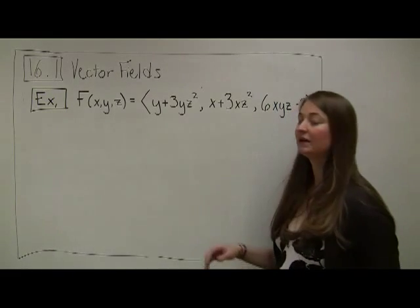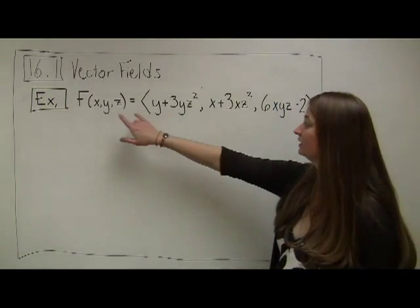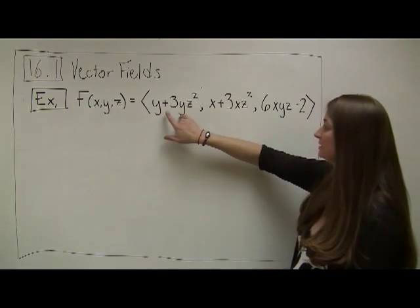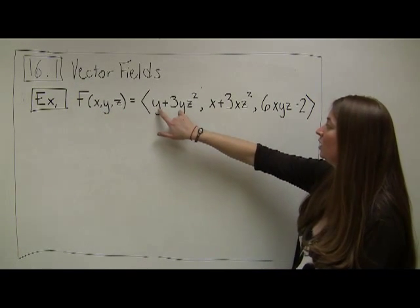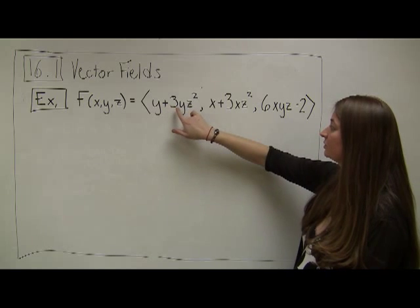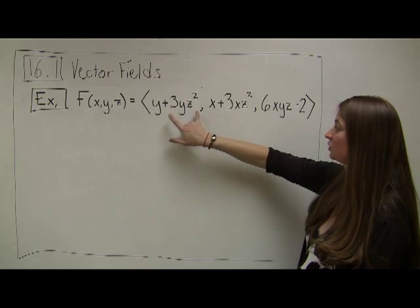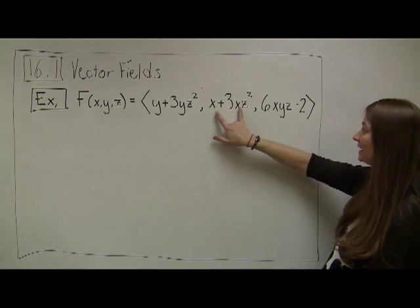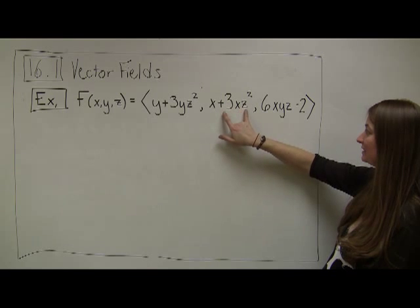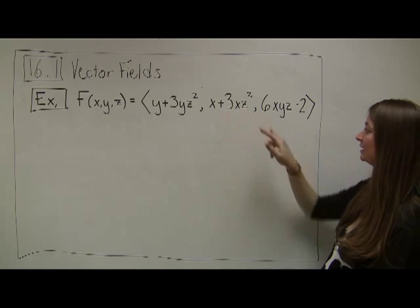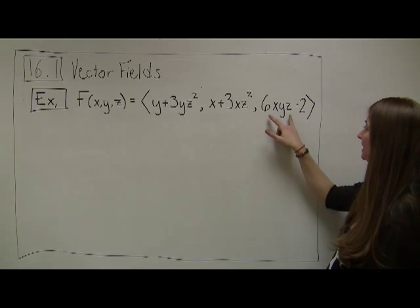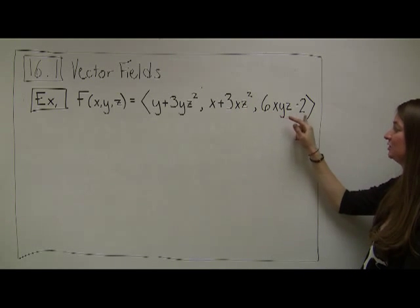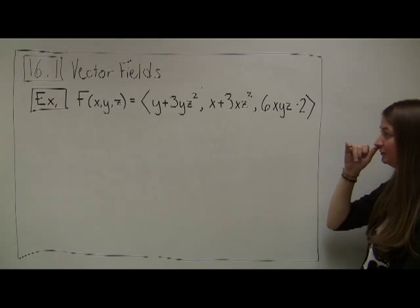Let's say that we have a gradient vector field given by f(x, y, z) equal to y plus 3yz² in the first component function, x plus 3xz² in the second component function, and 6xyz minus 2 in the third component function.